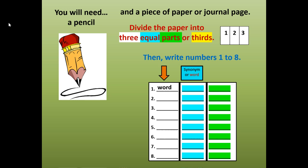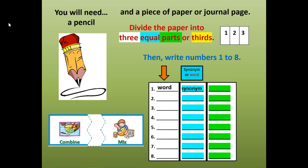At the end of our lesson, you're going to write a synonym or a shorter definition in the second column. A synonym is a word that means the same — such as combine is the same as mix. If you don't catch the synonym or the definition, you could write the word a second time. In the third column, draw a quick picture or sketch that helps you remember the word and what it means.